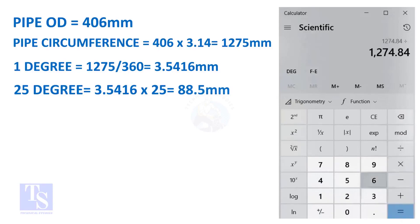And finally, multiply the 1 degree arc length by 25. Now you have the arc length of 25 degrees. You can apply this formula to get the arc length of any degree.